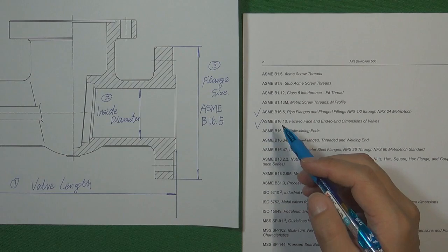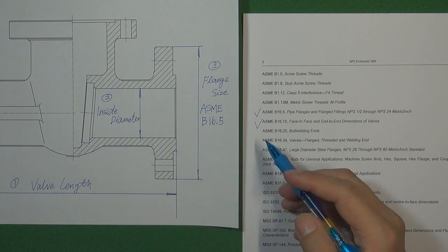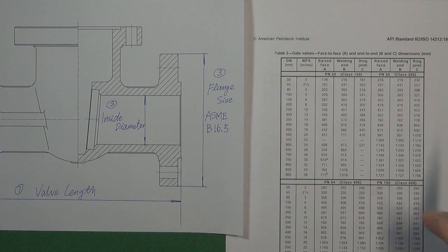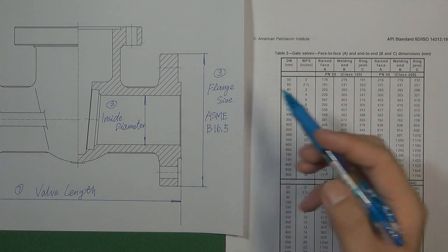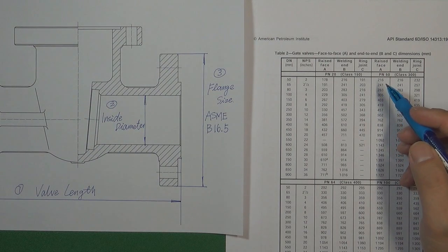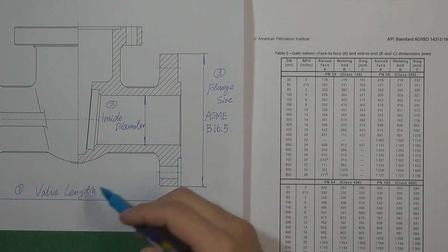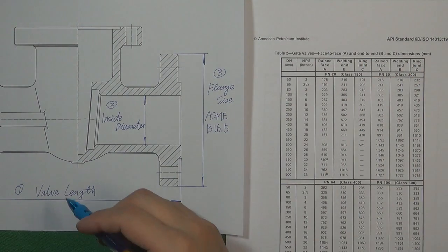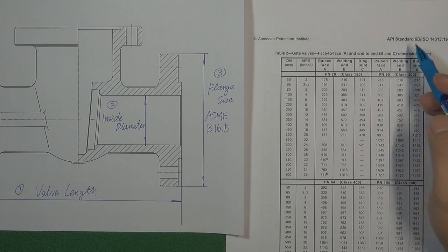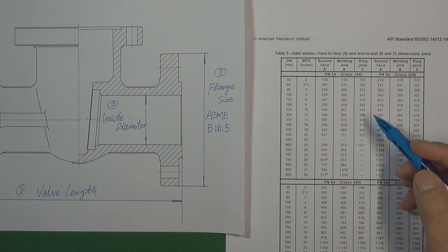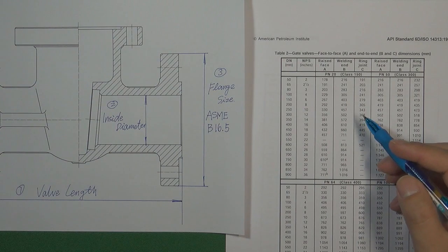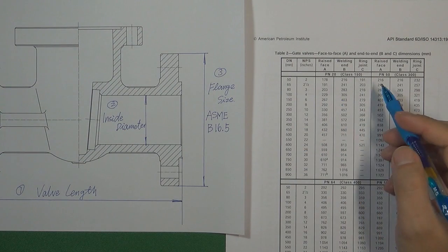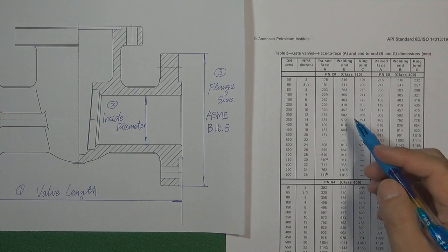When you use API-60 to design a gate valve body, these standards are more specific because API-60 already offers one table for you to determine the valve length. The table is called 'Gate Valve Face-to-Face Dimensions.' When designing a gate valve body from API-60, you must follow this table to find the correct design factor. The table is very easy to use because it is already divided into different valve sizes and different pressure classes.